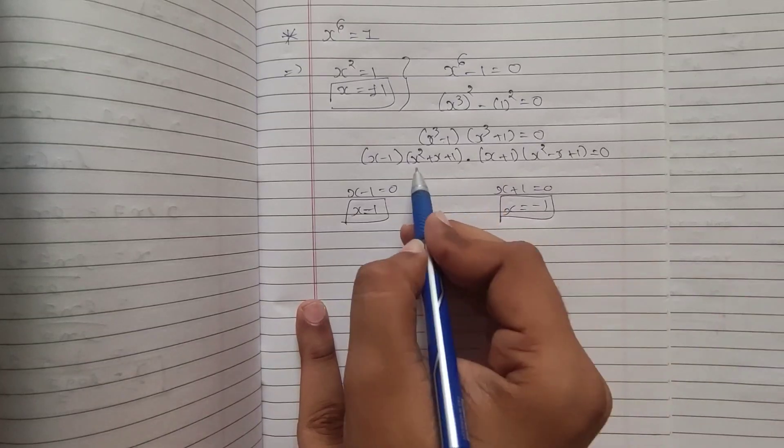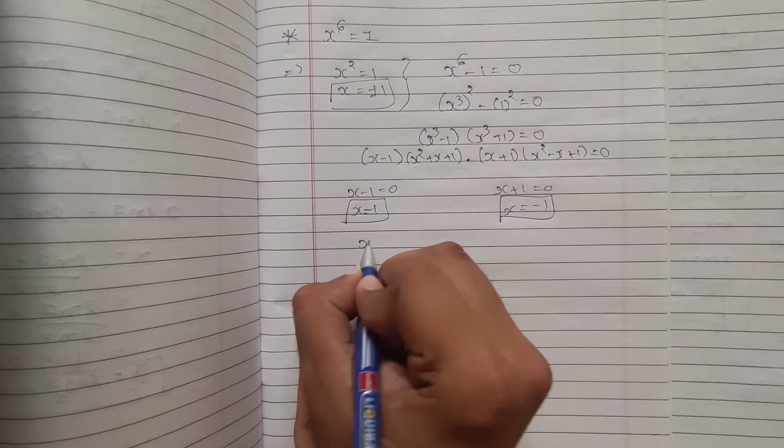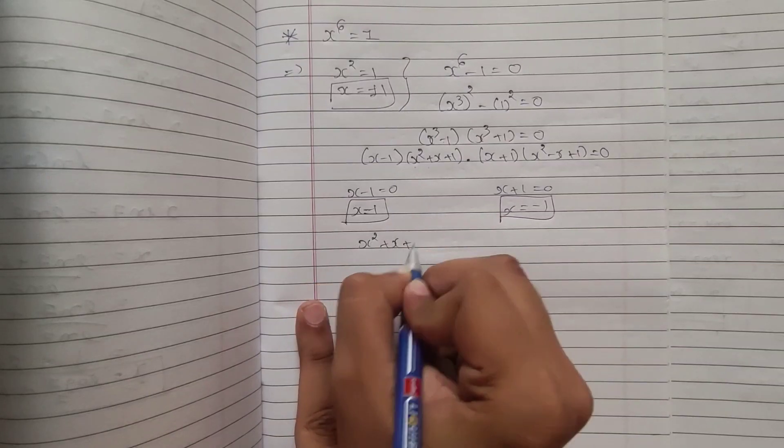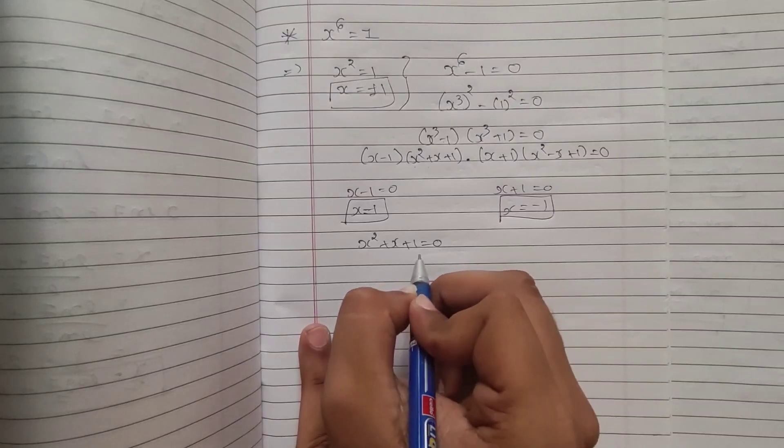Now, we will get 4 different values from both second order quadratic equations. So, first of all, I can write x squared plus x plus 1 equal to 0. If I solve this by minus b plus or minus square root of b squared minus 4ac divided by 2a formula,